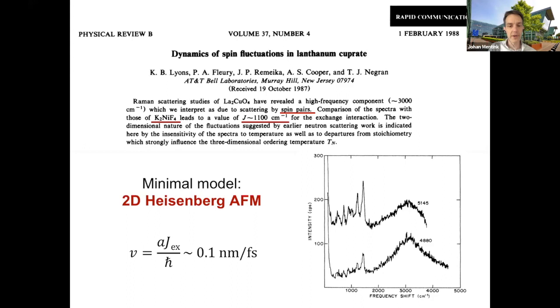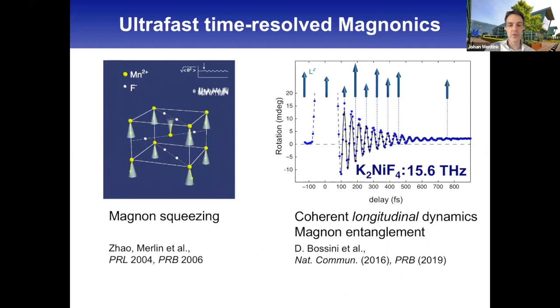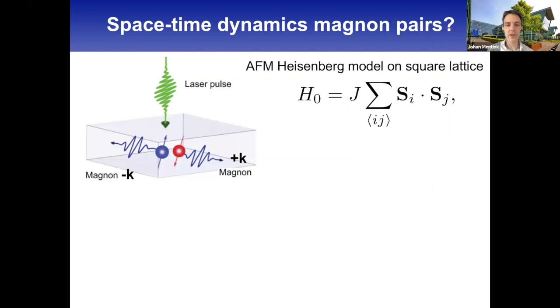This experimental Raman scattering measurement shows spin pair excitations - pairs of magnons. This has been studied in the time domain where people realize you can interpret this as magnon squeezing or a special type of spin dynamics. Normally we think about precessional motion, but here we have longitudinal motion that can be interpreted as magnon entanglement. The question is: can we understand the space-time dynamics of these magnon pairs? Conceptually, a laser pulse perturbs the exchange interaction and you see magnons with opposite momenta propagating in your system.